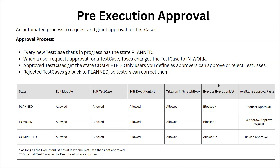This table defines all the states which users can or can't change with respect to test cases or connected objects. For example, if your test case is in the planned state, you can edit the module, edit the test case, edit the execution list, and do a trial learn in your scratch book, but your execution list cannot be executed. The approval task available is to request an approval. Similarly, for in-work state test cases, you can edit the module but cannot edit the test case; you can edit the execution list and do a trial learn, but cannot execute the execution list.